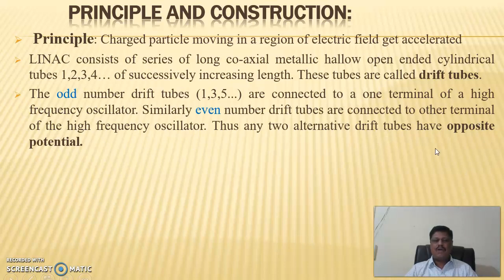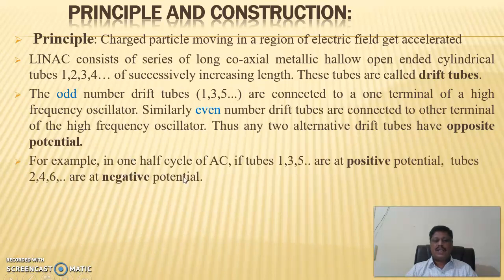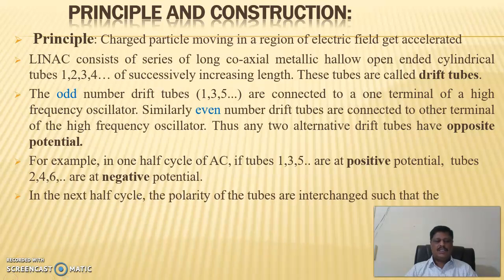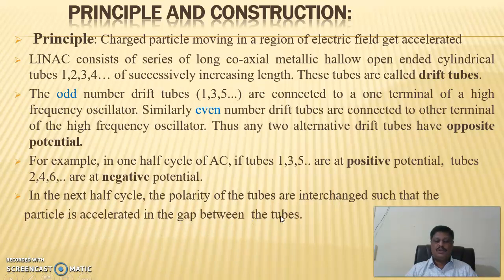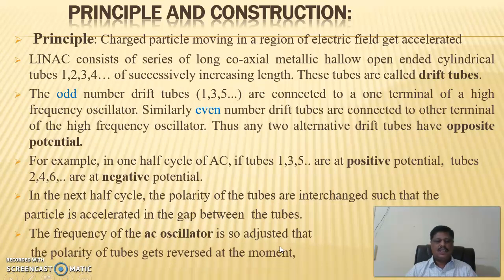For example, in one half-cycle of AC, if tubes 1, 3, 5 are at positive potential, tubes 2, 4, 6 are at negative potential. In the next half-cycle, the polarity of the tubes are interchanged such that the particle is accelerated in the gap between the tubes and it moves with a constant velocity within the tubes. This is an important point. The particle is accelerated in the gap between the tubes and moves with a constant velocity within the tube. The frequency of the AC oscillator is so adjusted that the polarity of the tubes gets reversed at the moment when the particle reaches the gap between the tubes.